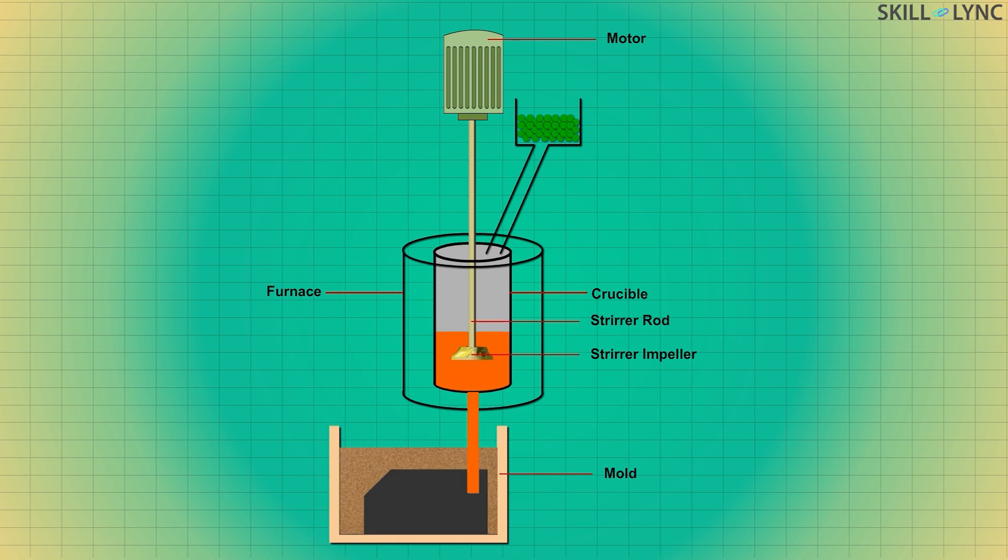Now the molten matrix is poured into the mold. This mold can be a permanent mold, a sand mold, or a lost wax mold. The molten matrix is allowed to cool down and solidify inside the mold. After the solidification process is over, the final casting is obtained.